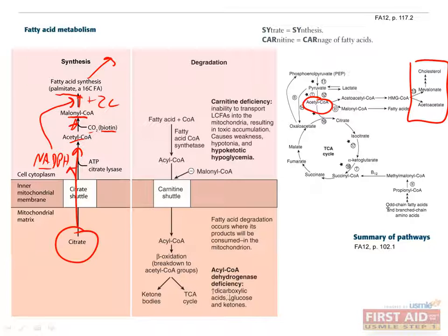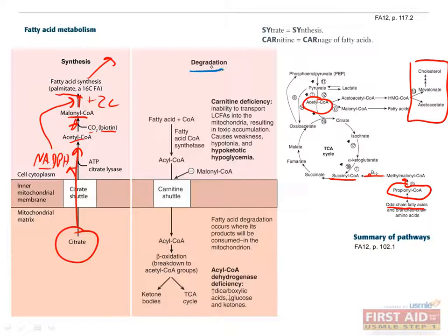For the same reason, when odd-chain fatty acids are degraded, they also have to create a molecule of propionyl coenzyme A, which enters the TCA cycle as succinyl coenzyme A. Fatty acid degradation, also called beta-oxidation, occurs in the mitochondria, since this is where its products will be used.